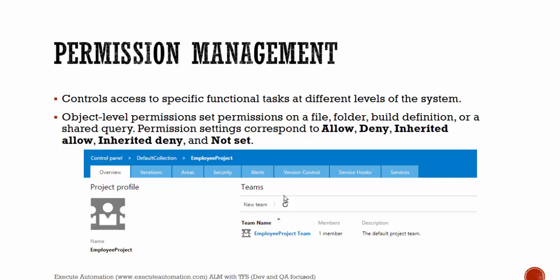The last management area is permission management. This controls access to specific functional tasks at different levels of the system. Object level permissions set permissions on a file, a folder, build definitions, or shared queries. Permission settings correspond to allow, deny, inherited allow, inherited deny, not set, and so on. We'll talk about permission management in our demo as well.